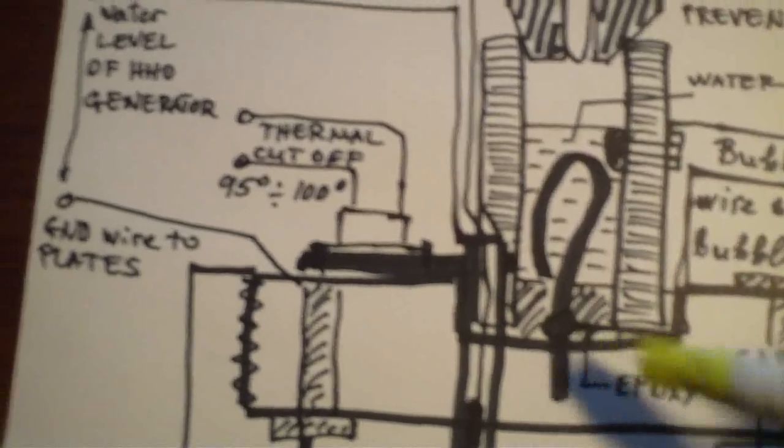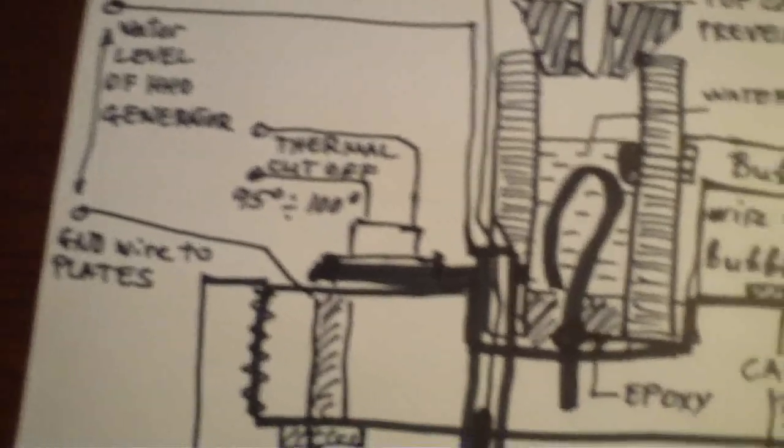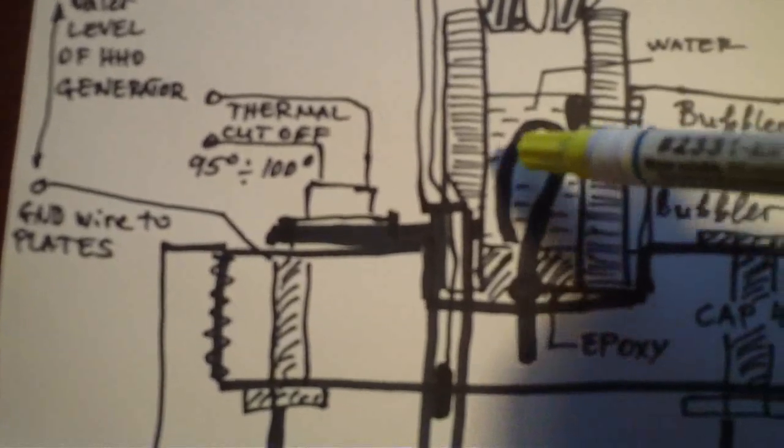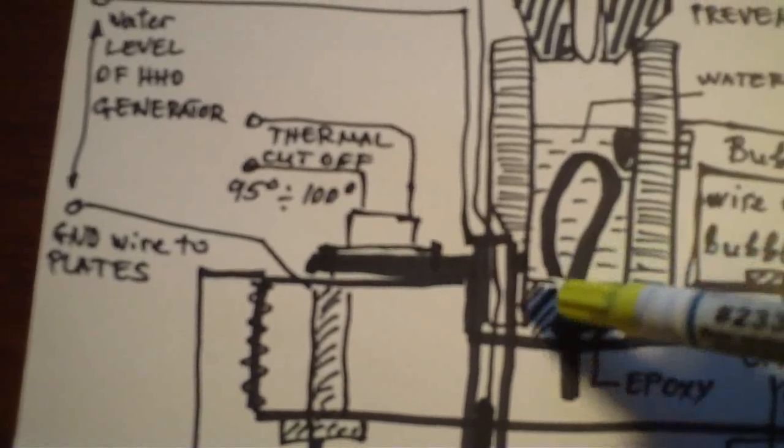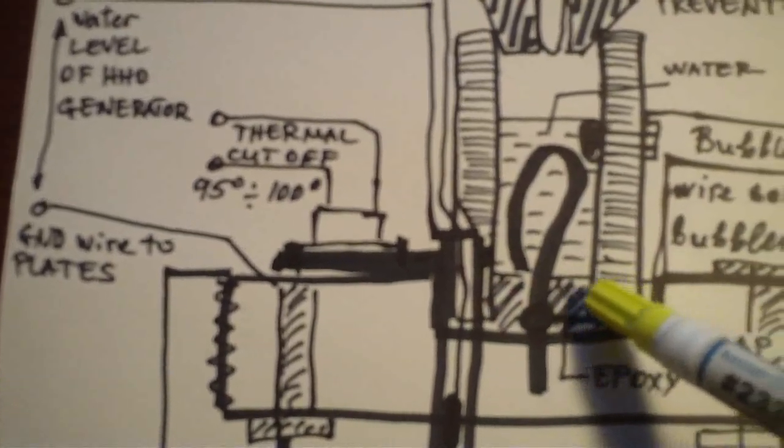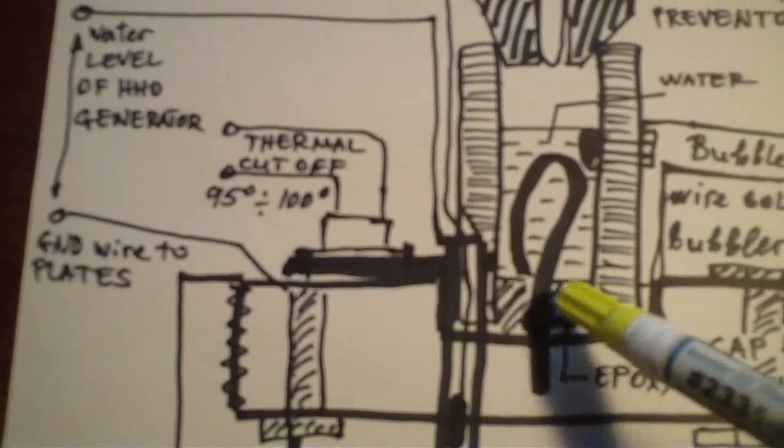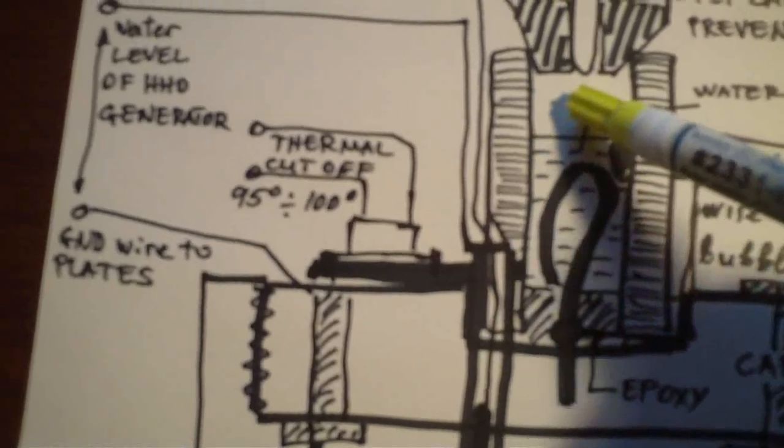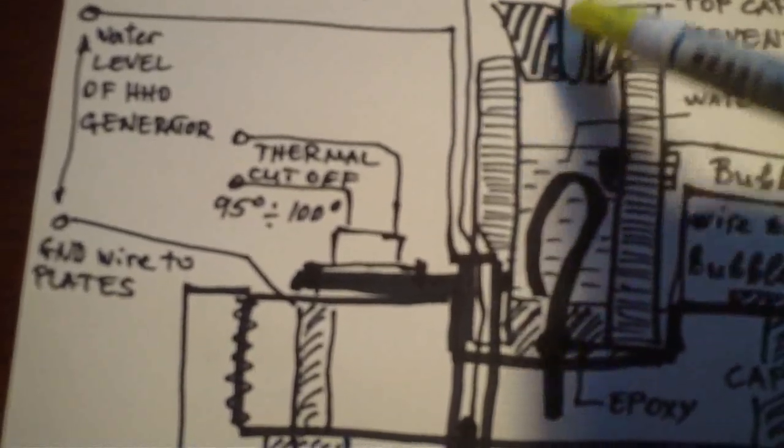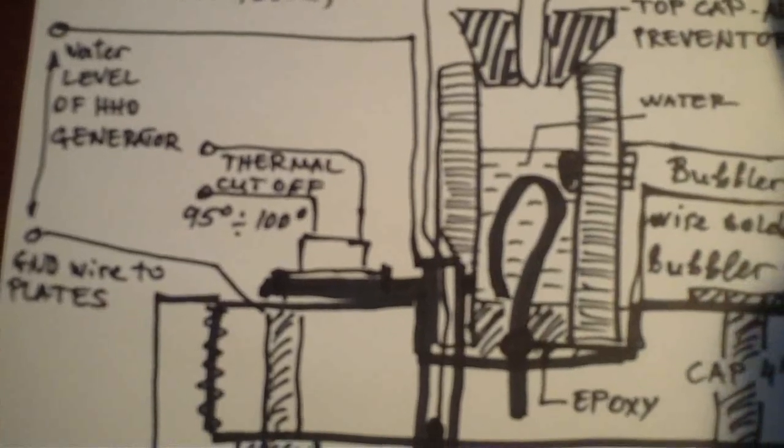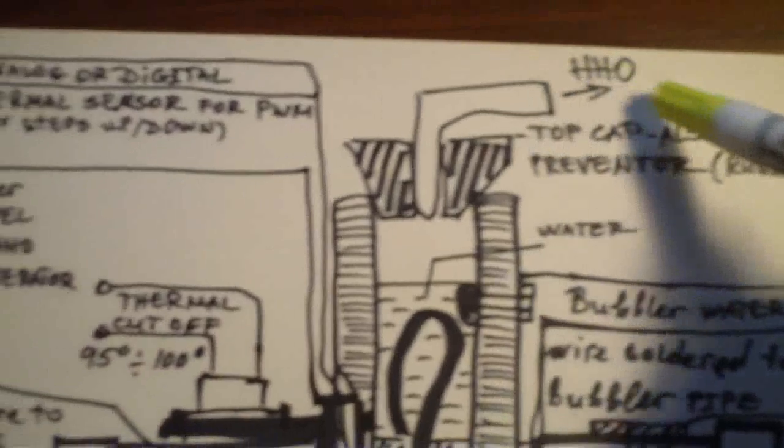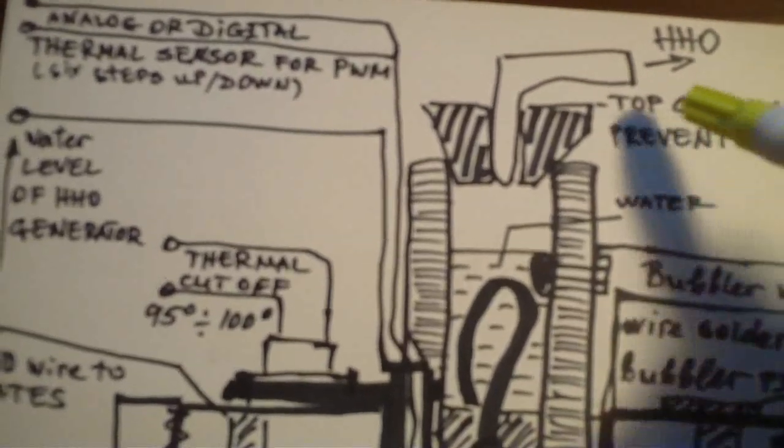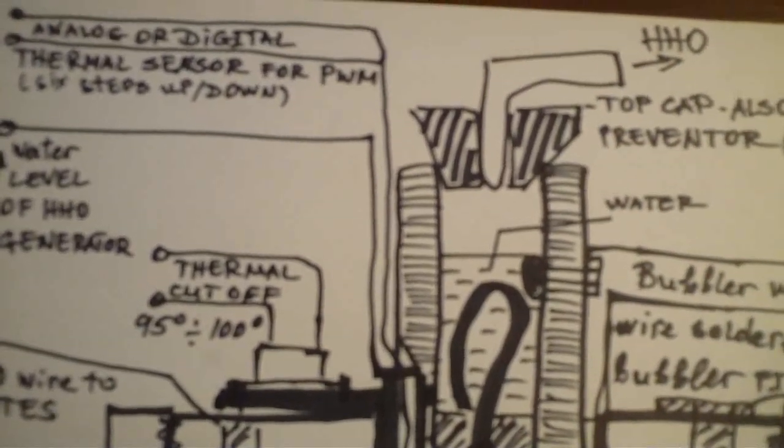The hydrogen goes from the water into the pipe here. The pipe is above the level of the epoxy and bubbles through the water in order to get out of the cap and the HHO tube which is fed to the motor of the car.